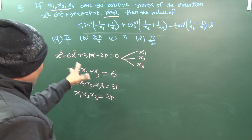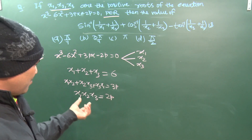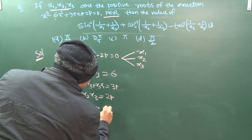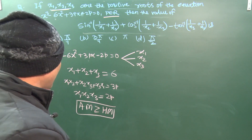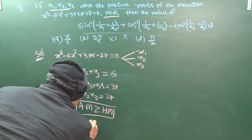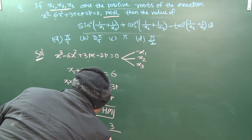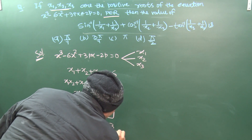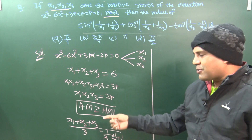Now, how do we solve for the individual roots? Instead of substituting directly, we use the property that arithmetic mean (AM) is greater than or equal to harmonic mean (HM). AM = (x1 + x2 + x3)/3, and HM = 3 / (1/x1 + 1/x2 + 1/x3).